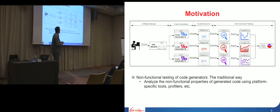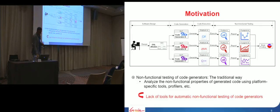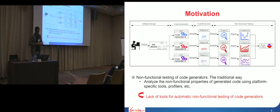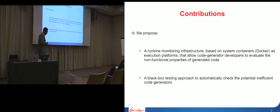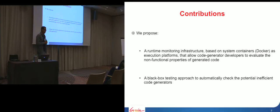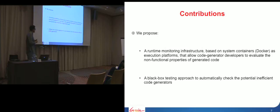Afterwards, a separate test is tried to investigate and find inconsistencies and bugs within these different profiles. Currently, we observe that there is a lack of automatic tools that extract these non-functional properties, especially for resource usage. In this context, we present our approach for automatic non-functional testing of code generators. We plan two main contributions: the first is providing a runtime monitoring infrastructure based on system containers, namely Docker, as execution platforms for the generated code, in order to evaluate non-functional properties related to resources.